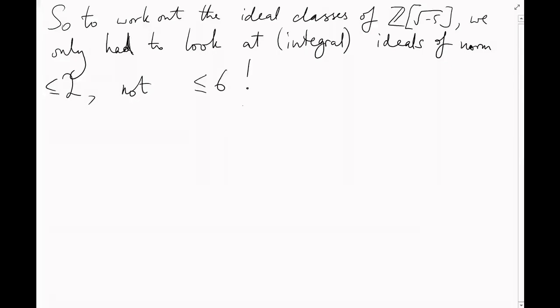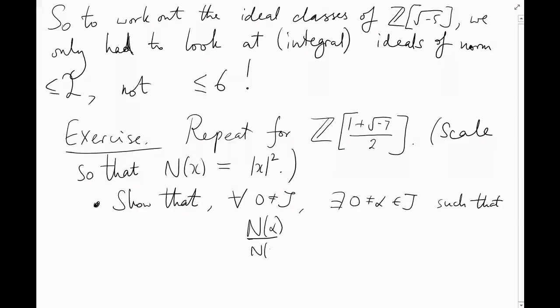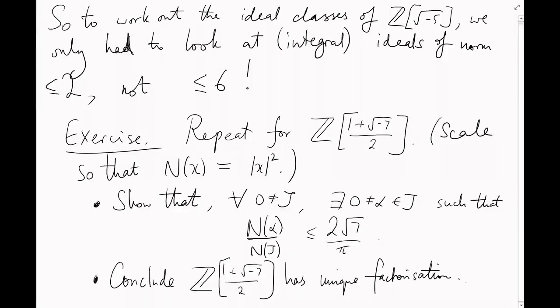Here's an exercise to show you again how powerful this tool is. Repeat this calculation for the ring Z adjoin (1 plus root minus 7) over 2. The norm function again will just be the square of the magnitude inside the complex numbers. And you should find that every non-zero integral ideal j contains a non-zero element alpha, such that the norm of alpha over the norm of j is at most 2 root 7 over pi. Now, given that 2 root 7 over pi is strictly less than 2, you can conclude immediately that this ring is a unique factorization domain.